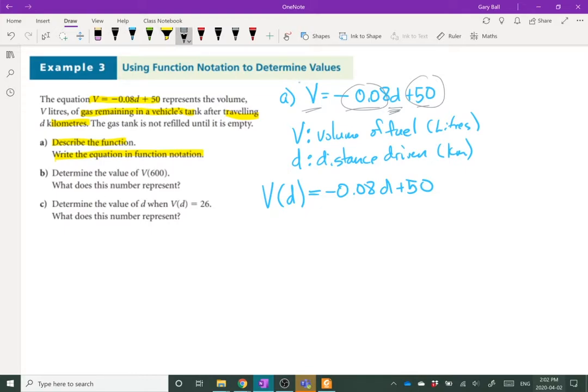So this is an equation. This is function notation. Really doesn't look much different. It's not really an equation because this right here is not V times D. We're saying it's V of D. So the volume with respect to the distance driven equals negative 0.08 D plus 50. That's A.